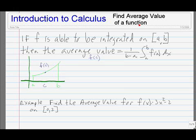Let's look at finding the average value of a function. If f is able to be integrated on the closed interval [a, b], then the average value, which we'll call f(c), is 1 over b minus a times the integral from a to b of f(x)dx.